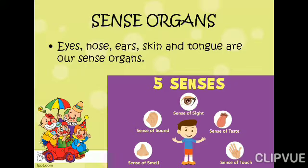And organs means our body parts. So sense organs are the body parts that give us feelings. We have five senses — like we have five fingers, we have five senses: sense of sight, sense of taste, sense of touch, sense of smell, and sense of sound.